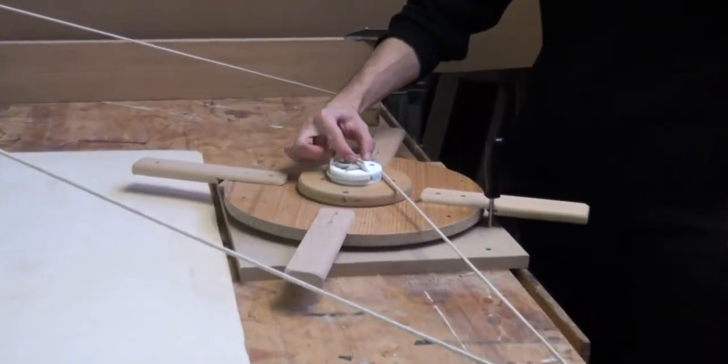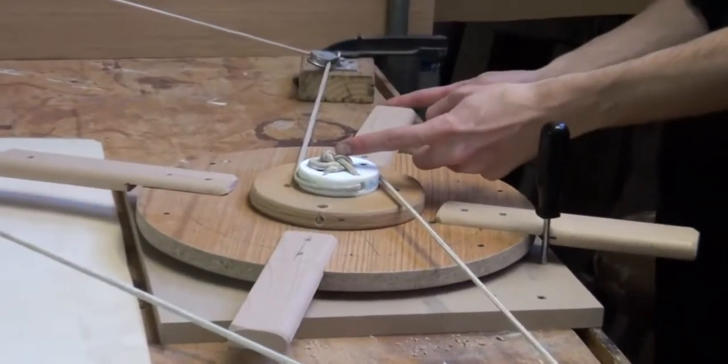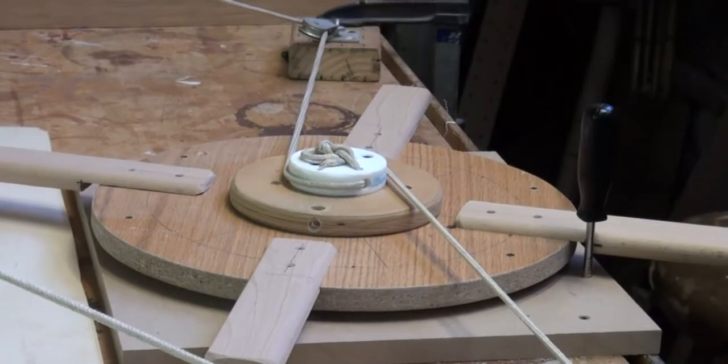The radius of this small circle is an inch and a half, and the radius of the bigger circle is 12 inches. That's called mechanical advantage.